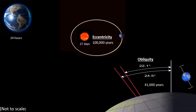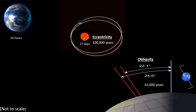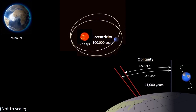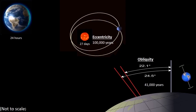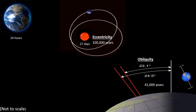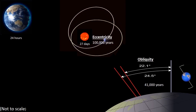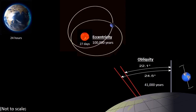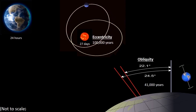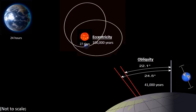The rotation of the Earth is at an angle to the vertical, and this angle changes over time. It moves from 22.1 degrees to 24.5 degrees and back again, over a time span of approximately 41,000 years.